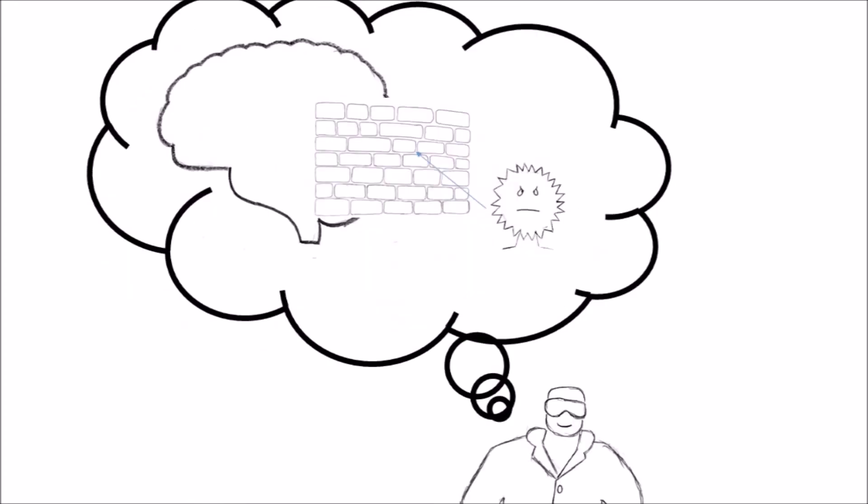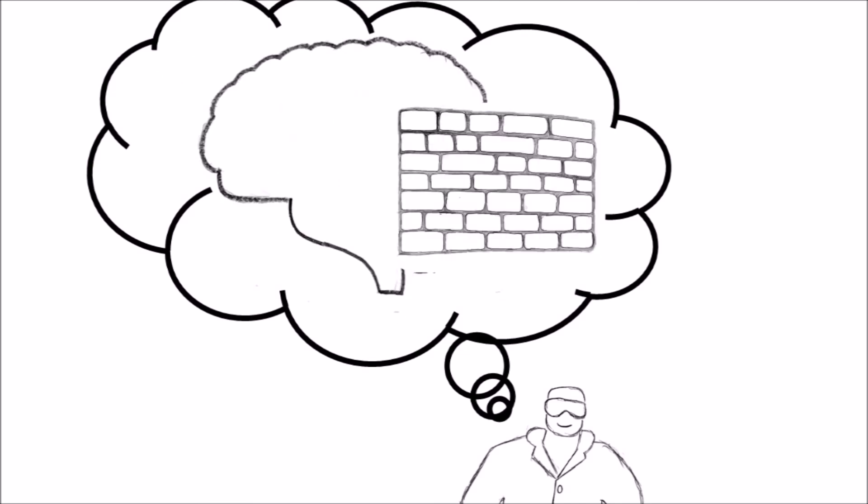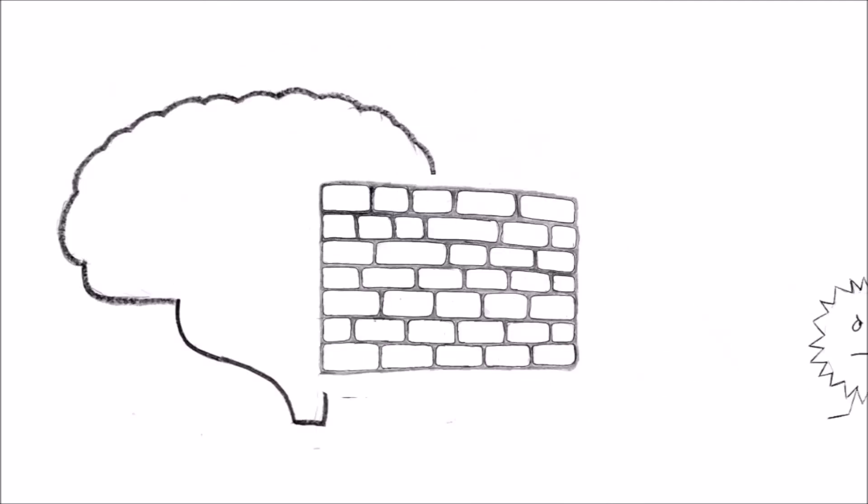In other diseases, the seals of the blood-brain barrier are broken and bad things can just float into the brain. Researchers are trying to figure out how to strengthen those seals to prevent the entry of toxic substances.